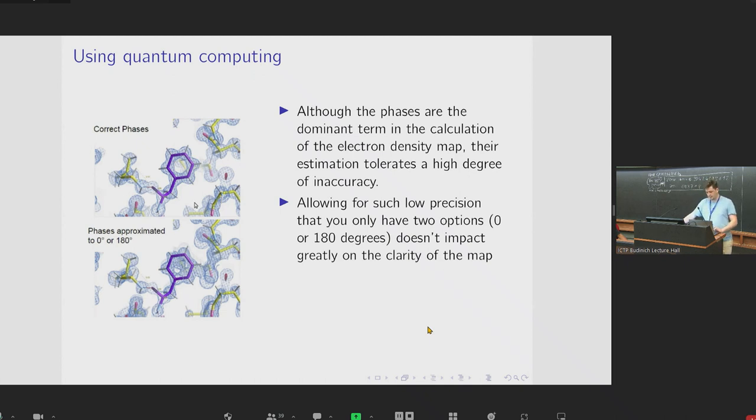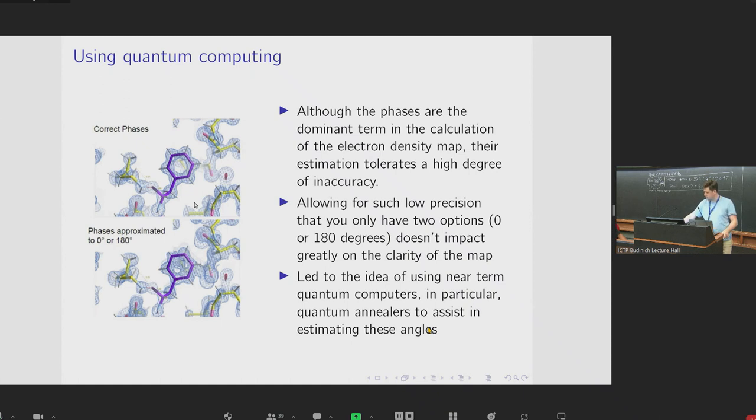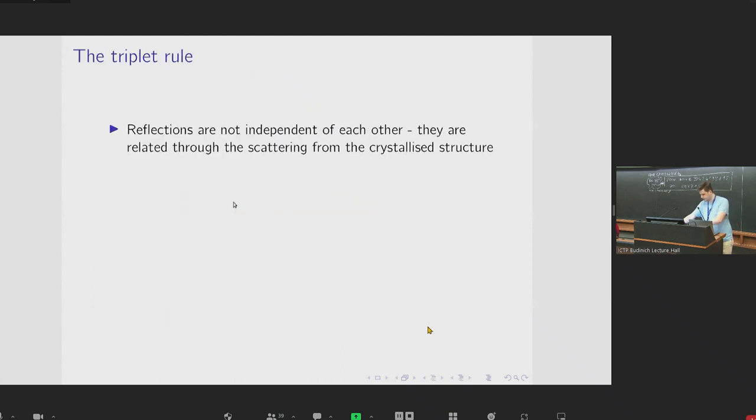And now this lack of required precision led to the idea that this could potentially be an application for near-term quantum devices, including annealers. So the reflection phases are not all independent of each other. And in particular, they are related through the scattering from the crystallized structure.